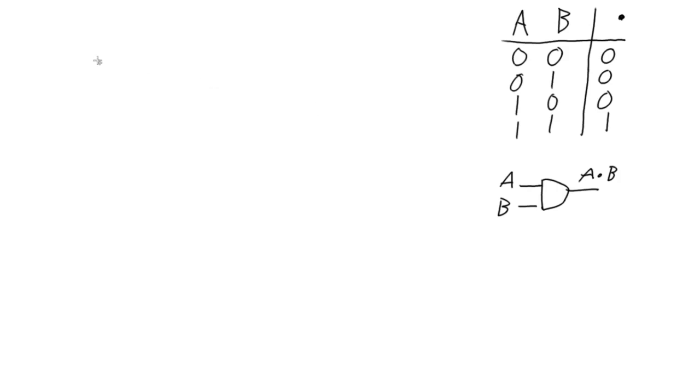All right, so our first theorem is X ANDed with 1 equals X. So that means here we've got X and a constant 1. So let's look at our truth table. Anywhere that we've got B is a 1, that's here, and B is a 1 here.